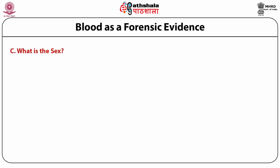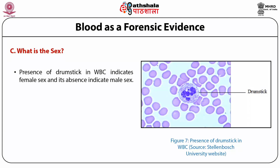To determine sex from blood, the presence of a drumstick in white blood cells (WBC) indicates female sex, and its absence indicates male sex. The presence or absence of the drumstick thus acts as a marker for sex determination from blood samples.